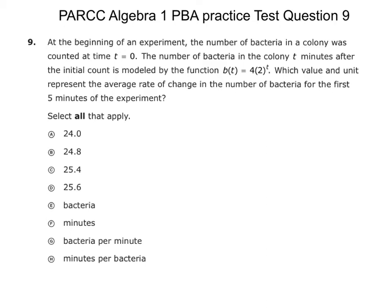Okay, so in this problem, let's read it. At the beginning of an experiment, the number of bacteria in a colony was counted at time equals zero. The number of bacteria in the colony t minutes after the initial count is modeled by the function b of t equals 4 times 2 to the t power, which value and unit.